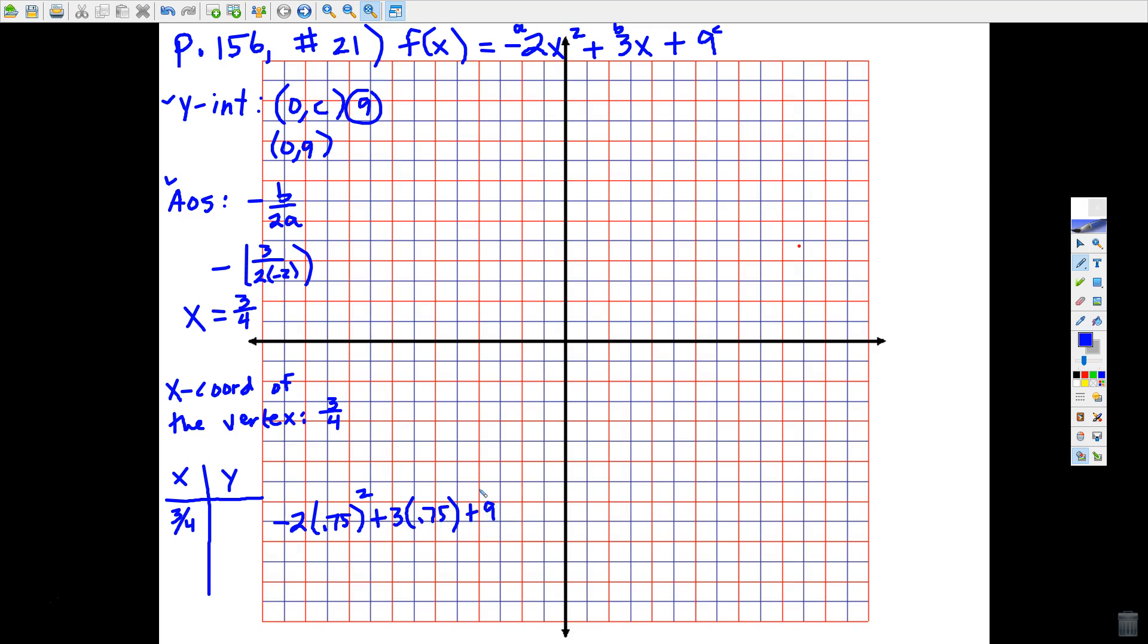I'm going to grab my calculator and work through this. So negative 2 parentheses 0.75 close parentheses raised to the second plus 3 parentheses 0.75 close parentheses plus 9. I end up with 10.125, which in fraction form is 10 and an eighth.